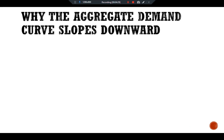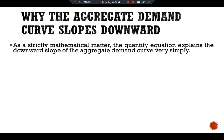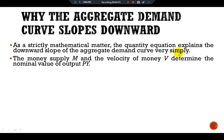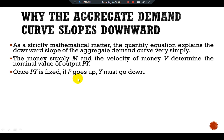The main question is: why does the aggregate demand curve slope downward? As a strict mathematical matter, the quantity equation explains the downward slope very simply. The money supply M and velocity of money V together determine the nominal value of output PY. Once PY is fixed, if P goes up, Y must go down.